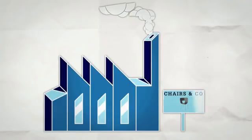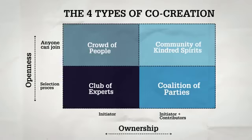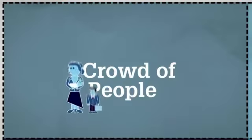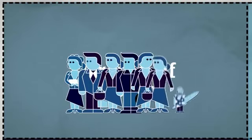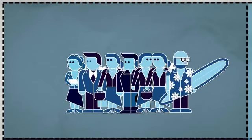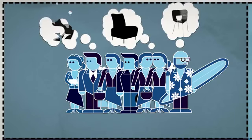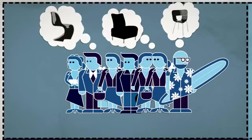Let's apply the four types to the example of a chair manufacturer. Cases when anyone can join but results are owned by the initiator, we call crowd of people, or crowdsourcing. This form is all about the wisdom of the crowds. Using online platforms, you might find someone out there with the solution to your problem — for instance, a brilliant new chair design.